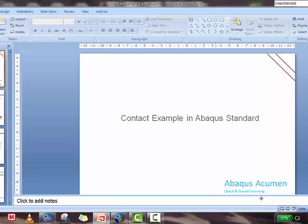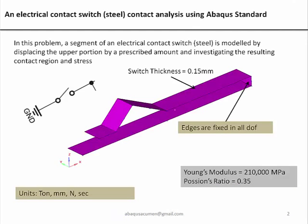We've already seen the contact problem modeled in HyperMesh. In this problem we are not only doing a contact analysis but also learning how to handle contact in terms of convergence — how we can handle this contact to get convergence fast. This is a typical electrical contact switch: a steel body with thickness of 0.15 millimeters. One edge is fixed, linear steel property is used, and a prescribed displacement is applied from the top. It touches the bottom flat surface and we check the contact pressure distribution.